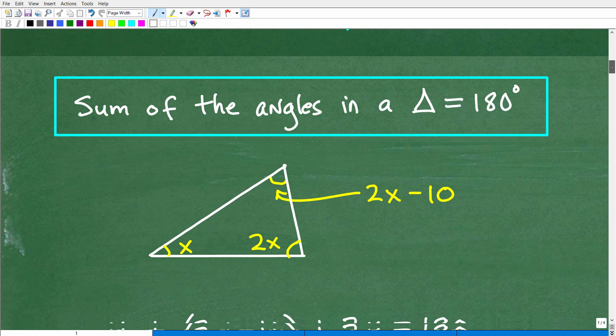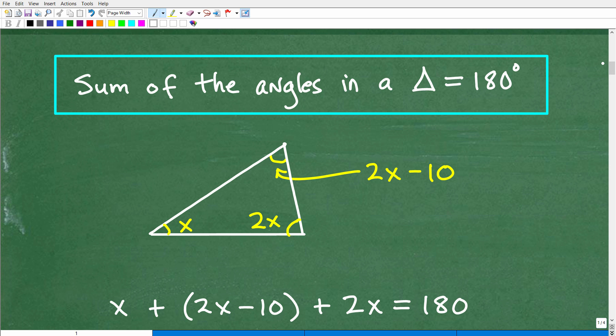And once you understand this, you'll probably go, oh, now I know how to solve this. So this is what you need to know, that the sum of the angles in a triangle is equal to 180 degrees.